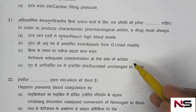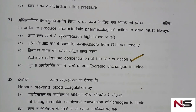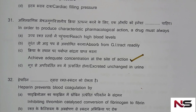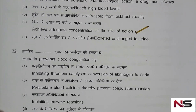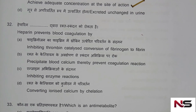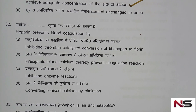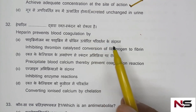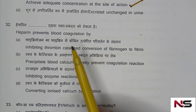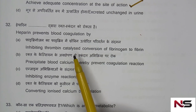The correct answer is option C — a drug should achieve adequate concentration at the site of action. Question 32: Heparin prevents blood coagulation by what mechanism? Options are provided.